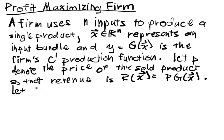And let C of x denote the cost. So this is the revenues, the great part, and now we have to talk about the cost of this input bundle x.